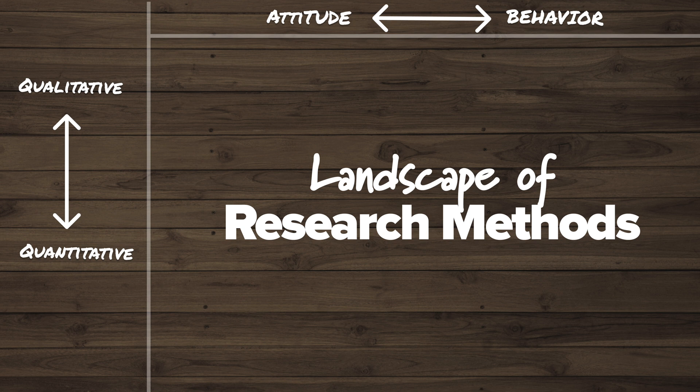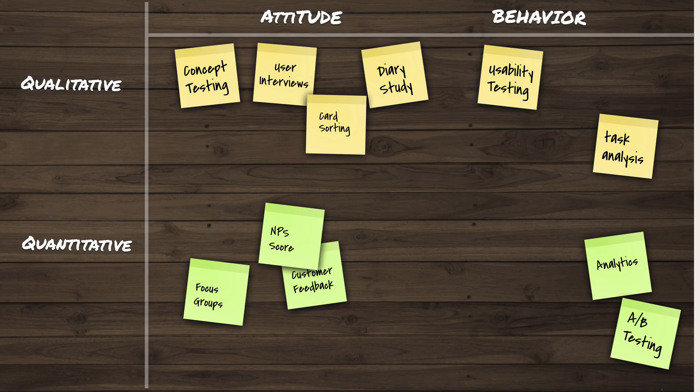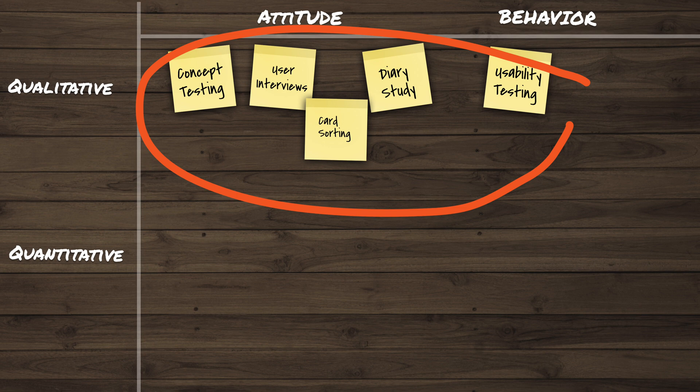I want to take a look at this kind of research landscape. Within the research landscape, you can kind of divide it up into an XY coordinate. Up at the top, there are labels: attitude and behavior. Down on the vertical column, there's qualitative and quantitative. All research methods kind of veer towards certain spectrums of these axes. It can be very attitudinal, very behavioral, very qualitative, or very quantitative.